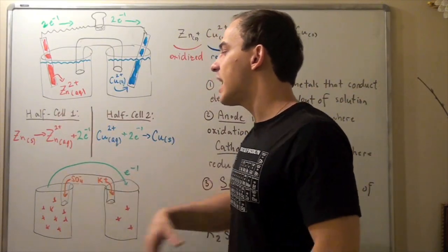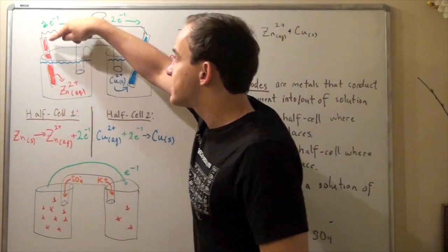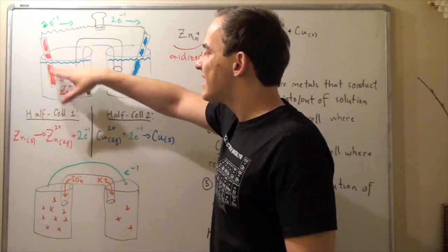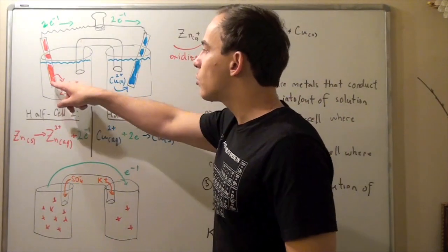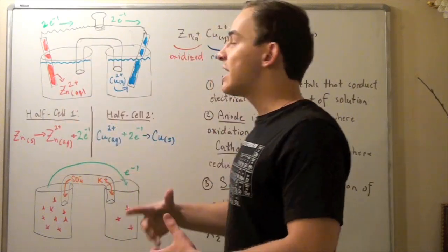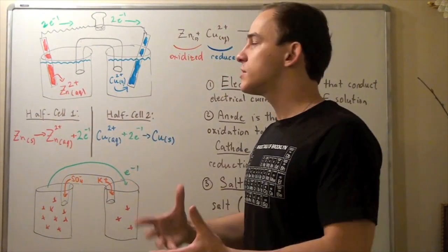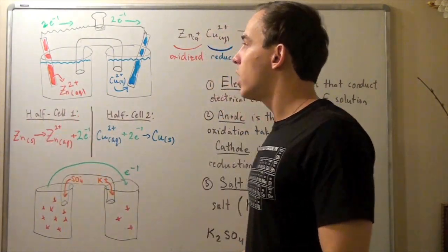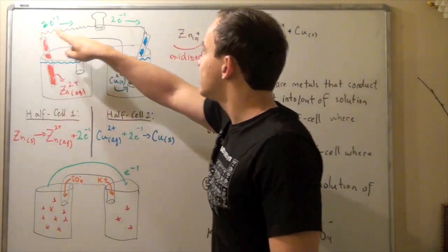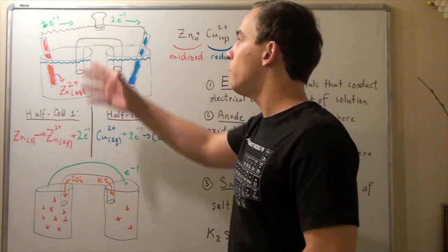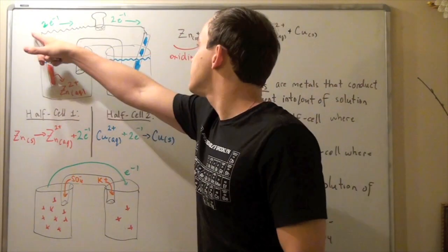Let's examine these reactions as they occur within our voltaic cell. In beaker number one, in half cell number one, this red bar corresponds to our zinc solid. Zinc solid releases two electrons and also releases zinc ions into the solution, so the concentration of zinc ions in the solution increases. At the same time, this increases the positive charge found within our solution in beaker one. These electrons travel through the conductor and into the other side, lighting up the light bulb, which allows us to visualize the movement of electrons from this side to this side.